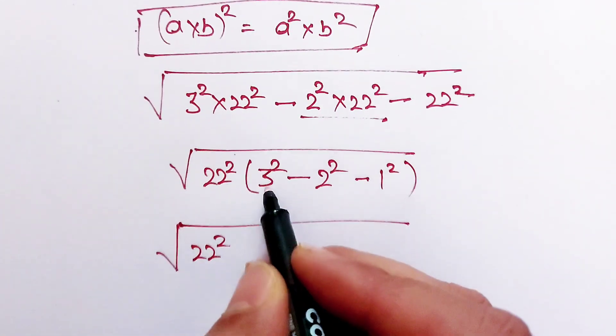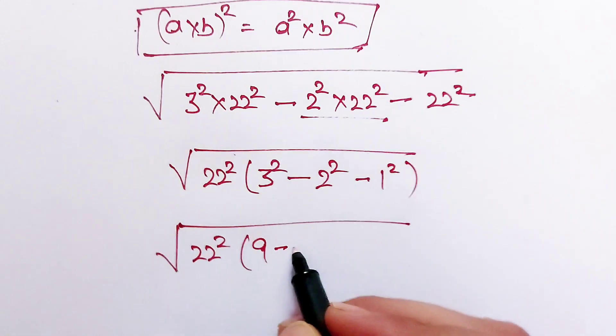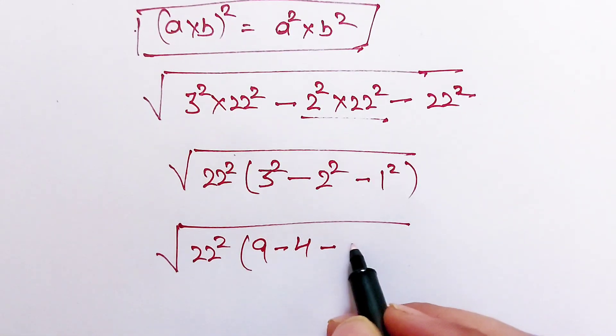Now 22 squared, this 3 squared is equal to 9, minus 2 squared equal to 4, minus 1 squared equal to 1.